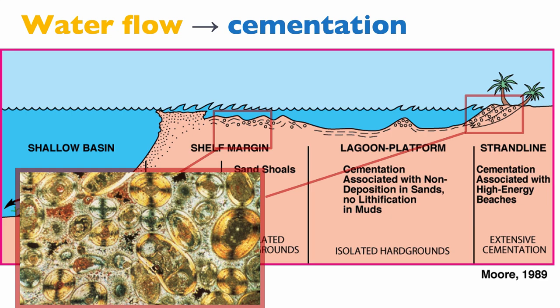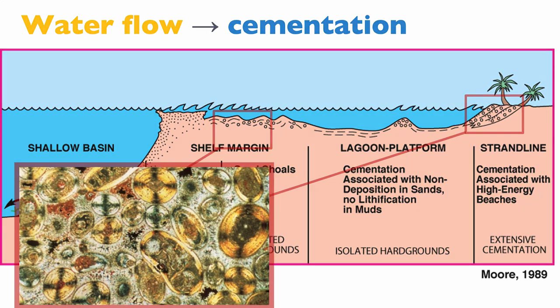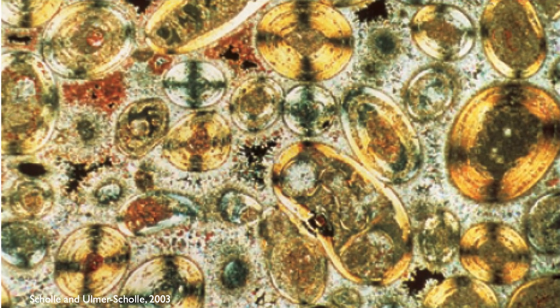Another place where you typically see a lot of cementation is in the back reef and the strand line - the beach - for the same reason, because these places have significant wave energy. Here's a beautiful example of a modern cemented oolitic shoal from the Bahamas. You can see these beautiful ooids completely cemented with no porosity. There are plenty of cases where porosity is preserved in ooids, but in this case everything is lost.